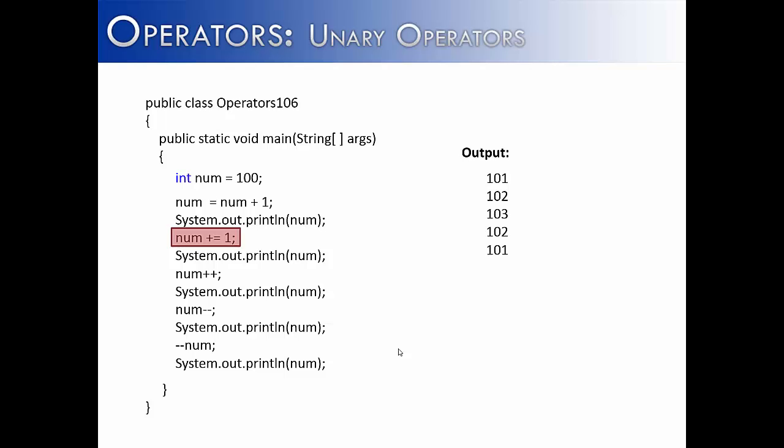Next we could use a shortcut and it would do the same thing as num is assigned to num plus one. It's just using a shortcut to do it and it would add one. And therefore when we print it, we would get 102.